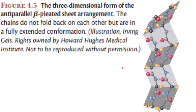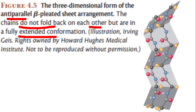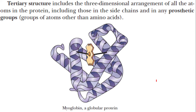Here is another figure of beta pleated sheet — these strands are anti-parallely arranged. In this diagram, the adjacent chains do not fold back on each other but are in an extended conformation — we can see that they are about to fold. The hydrogen bonding between the oxygen and the hydrogen atoms of the nitrogen is very clear in this diagram as well. We are now going to the tertiary structure, which we will see in the next slide.